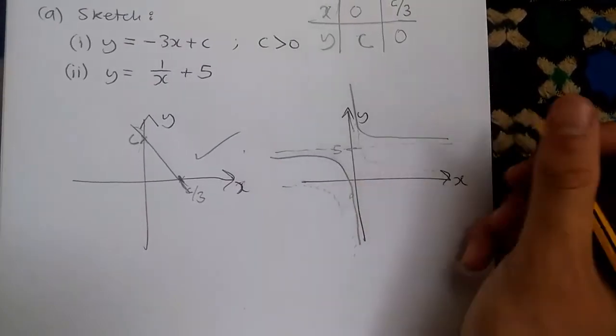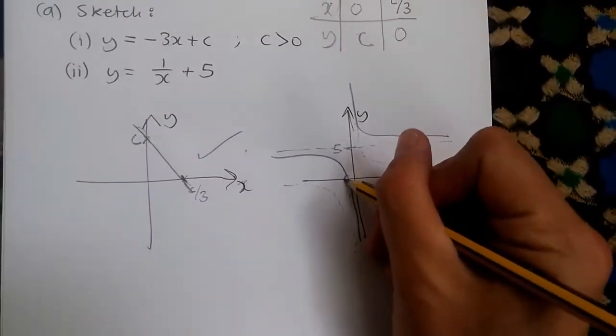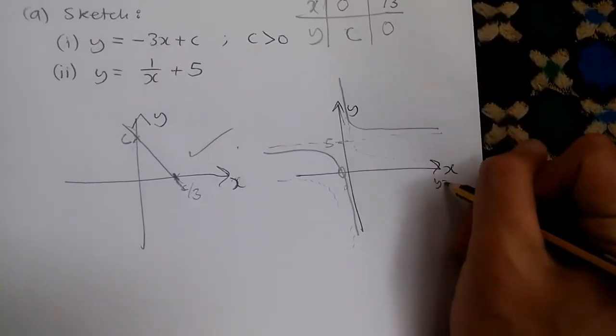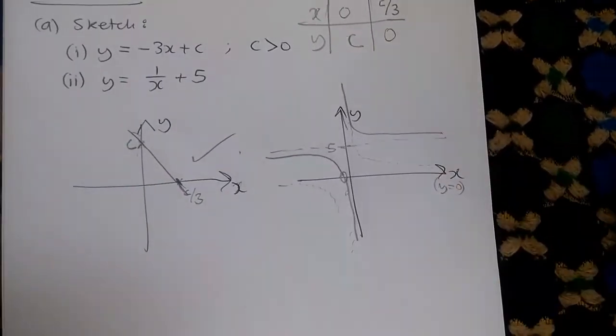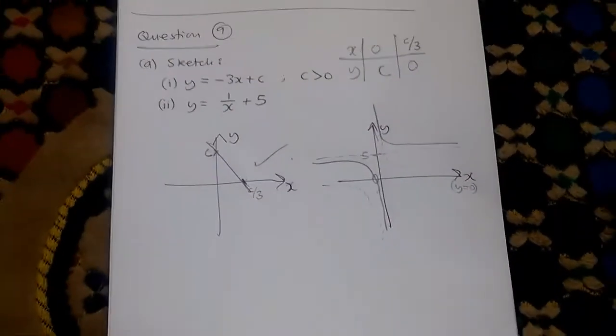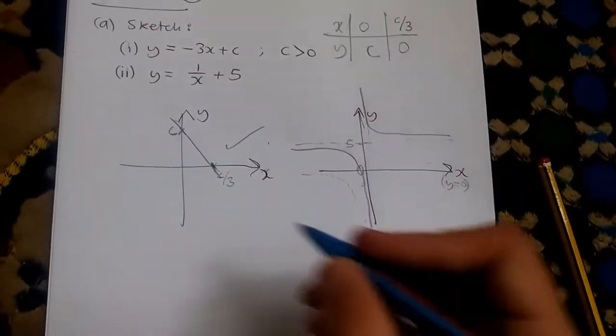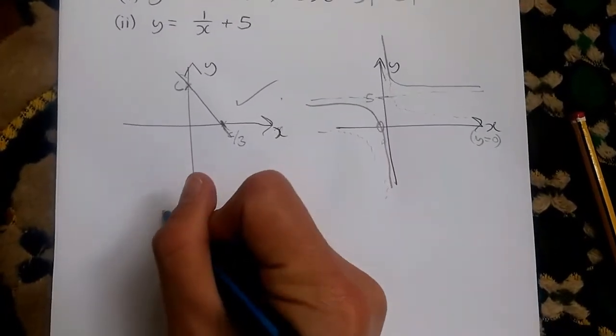Of course, we need to see where it cuts the x-axis, and we notice that it's at this point here. In other words, when y equals 0, this is the same as the x-axis line. So when y equals 0, what do we get? Matching this equation at y equals 0, we should have 0 equals 1 over x plus 5.